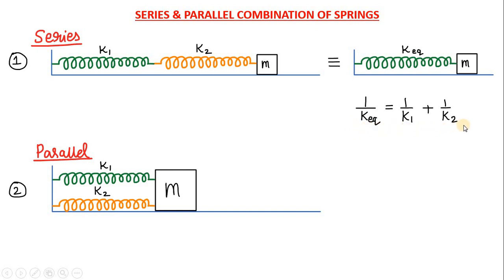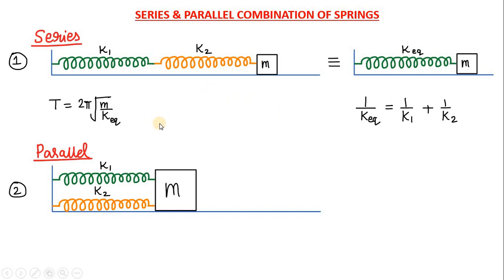We might see that this formula is opposite or reverse of the resistances combination. Because in the combination of resistances, for parallel combination we have this formula. But for the springs connected in series, the same is acting like the formula for series combination. Now coming back to the simple harmonic motion and time period, as we know that the time period of oscillation of a spring block system is given by the formula 2 pi root m by k.